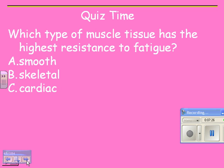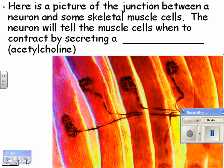Which type of muscle tissue has the highest resistance to fatigue? What happens if your leg muscles get tired? You rest — you don't die. What happens if your heart gets tired? You die. So the cardiac muscle tissue, you want to have a very high resistance to fatigue. Here's a picture of the junction. Junction means a connection — like the junction between two highways where they connect up. So a junction is when things connect.